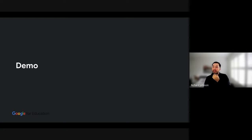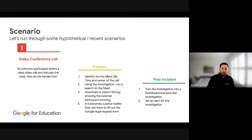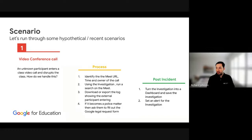I'm going to go through three relevant demos in the admin console — scenarios I've seen across education. The first scenario: there's a video conference call and an unknown participant enters. To handle this, you identify the Meet URL, time, or owner of the call, jump into the Investigation Center, and run a search on Meet. You can download and export logs showing the external participant entering. If it becomes a police matter, there is a form you can fill out as well.